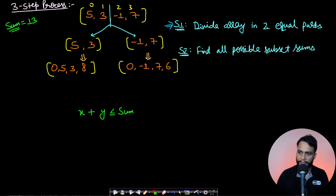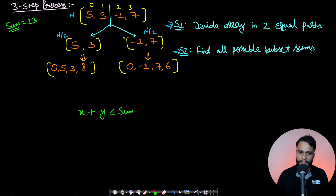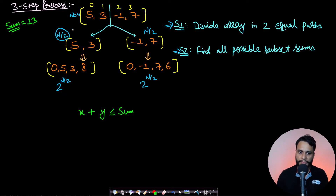After dividing, you have two arrays each with n/2 elements. Step two is to find all possible subset sums for each half. Each half with n/2 elements produces 2 to the power n/2 subset sums. With n equal to 4, n/2 is 2, so 2 to the power 2 equals 4 subset sums per half.